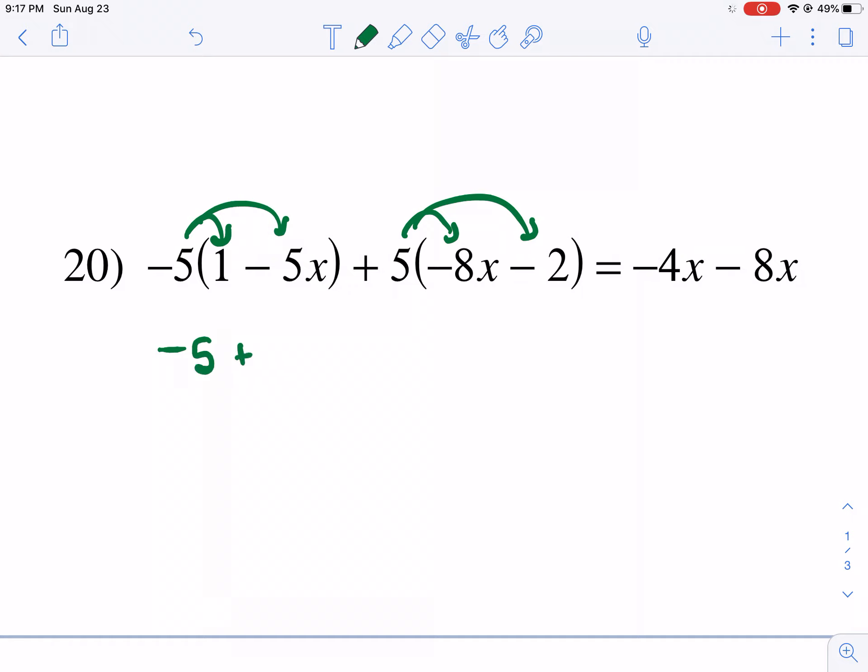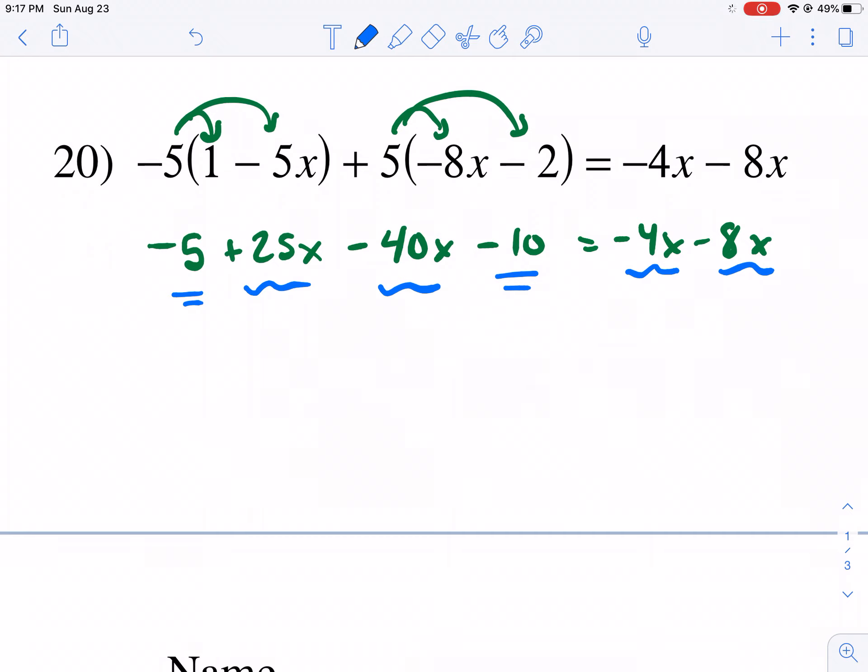So we're going to get negative 5. Distribute the negative 5. Then we have negative, negative, positive 25x plus, well, that's actually going to be minus. Why is it going to be minus? Because we have a positive 5 times a negative 8 because it's negative 40x minus 10 equals negative 4x minus 8x. Now we're going to simplify. We're going to combine like terms here. We have a constant, a constant on the left side. We have a variable variable on the left side. And then we have, we have a variable variable on the right side. So let's start with the left side. We have negative 15 as our constant, negative 5 plus a negative 10. And then we have 25x minus 40x. That gives me a negative 15x. That is equal to negative 12x.